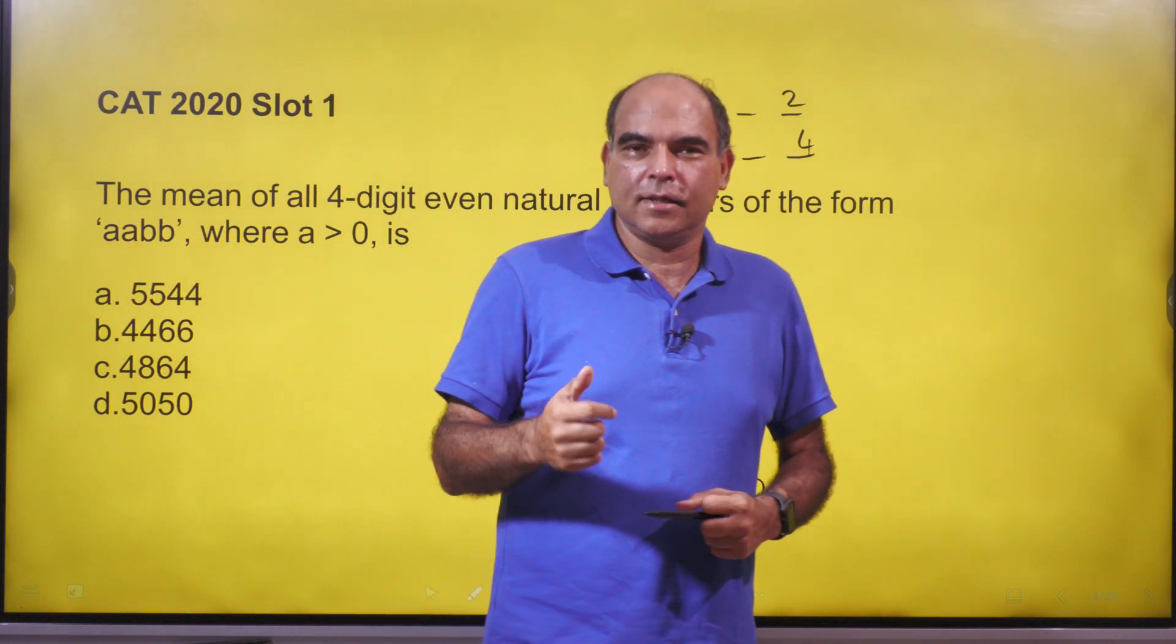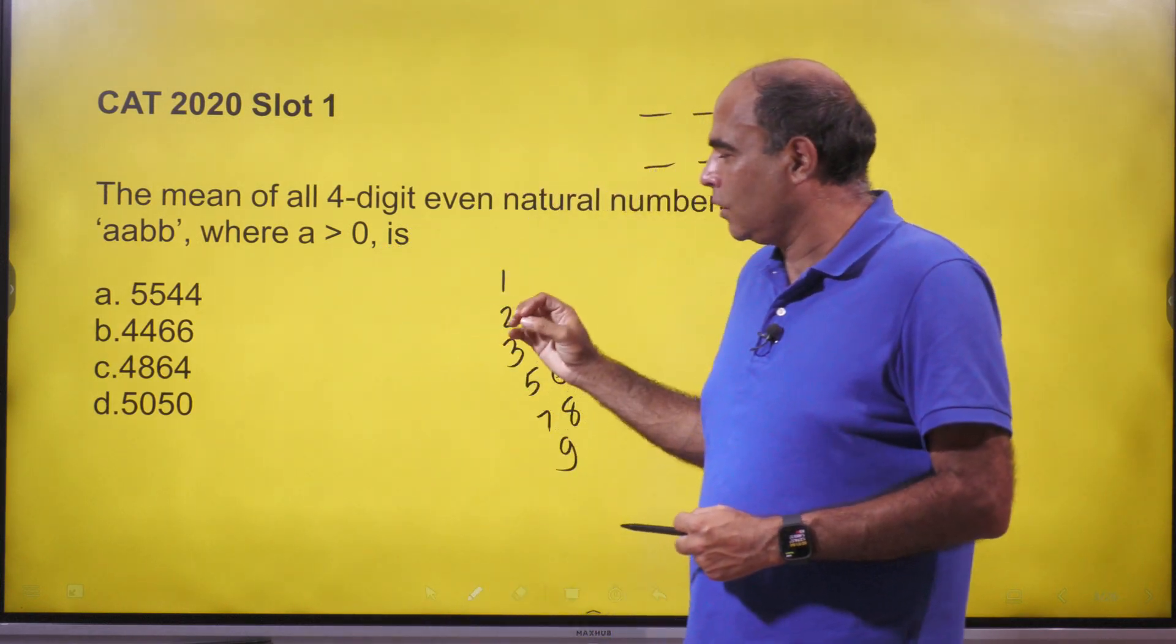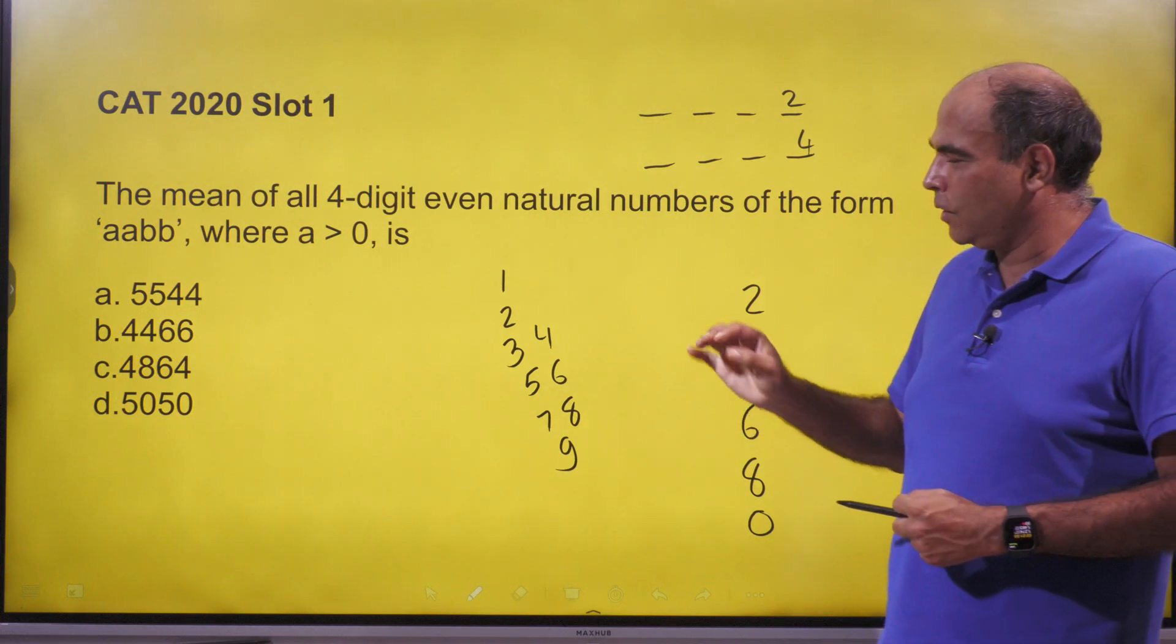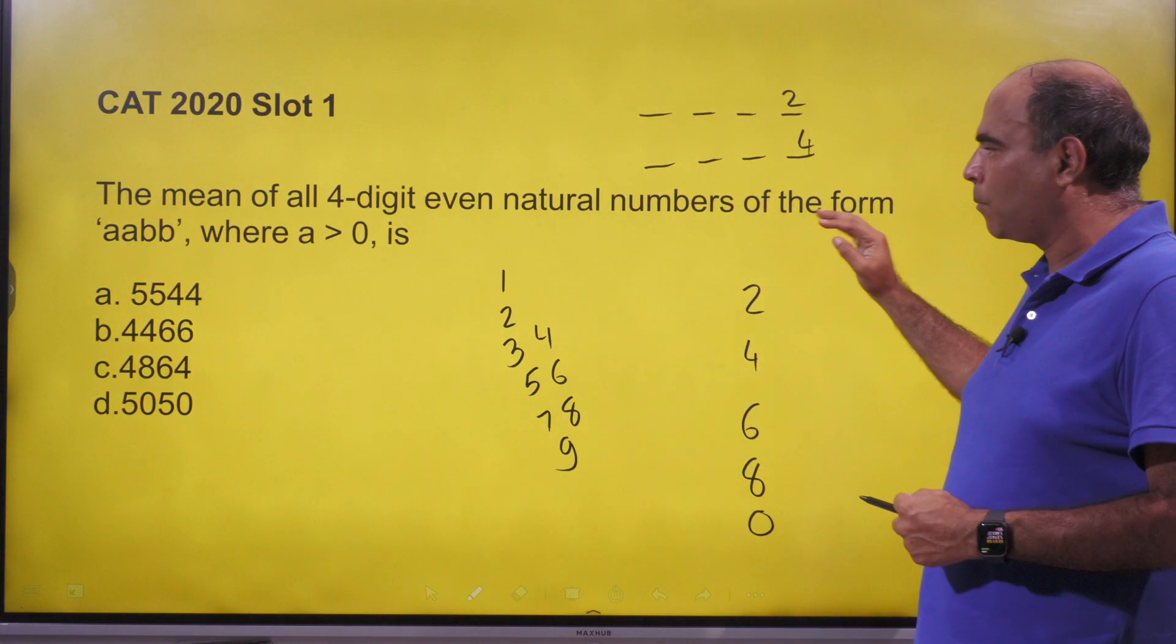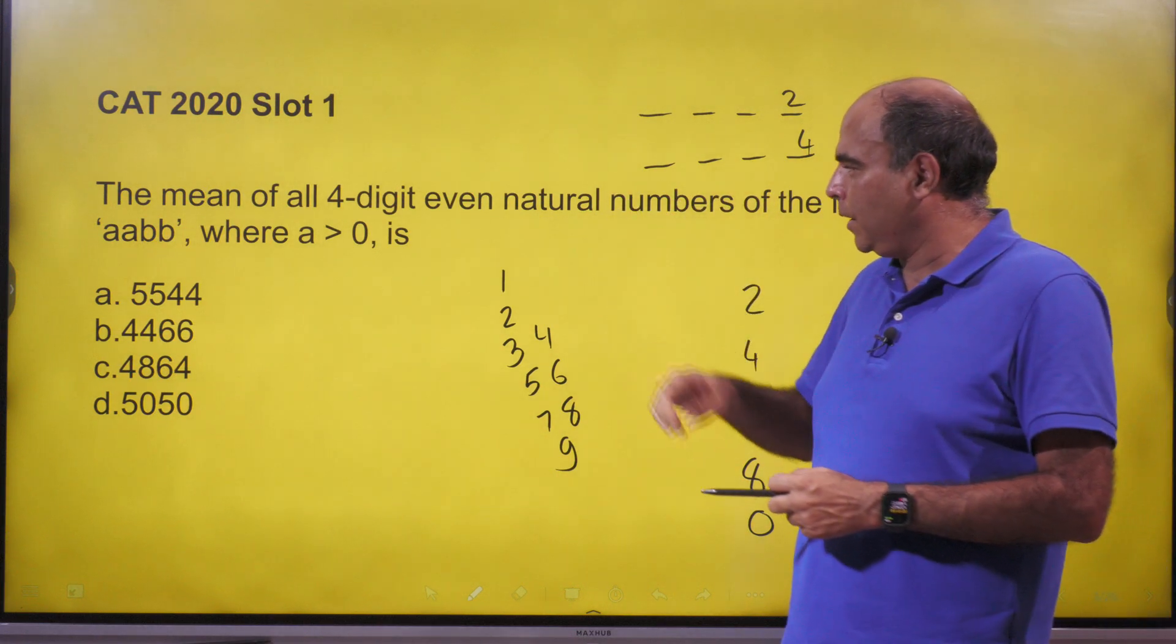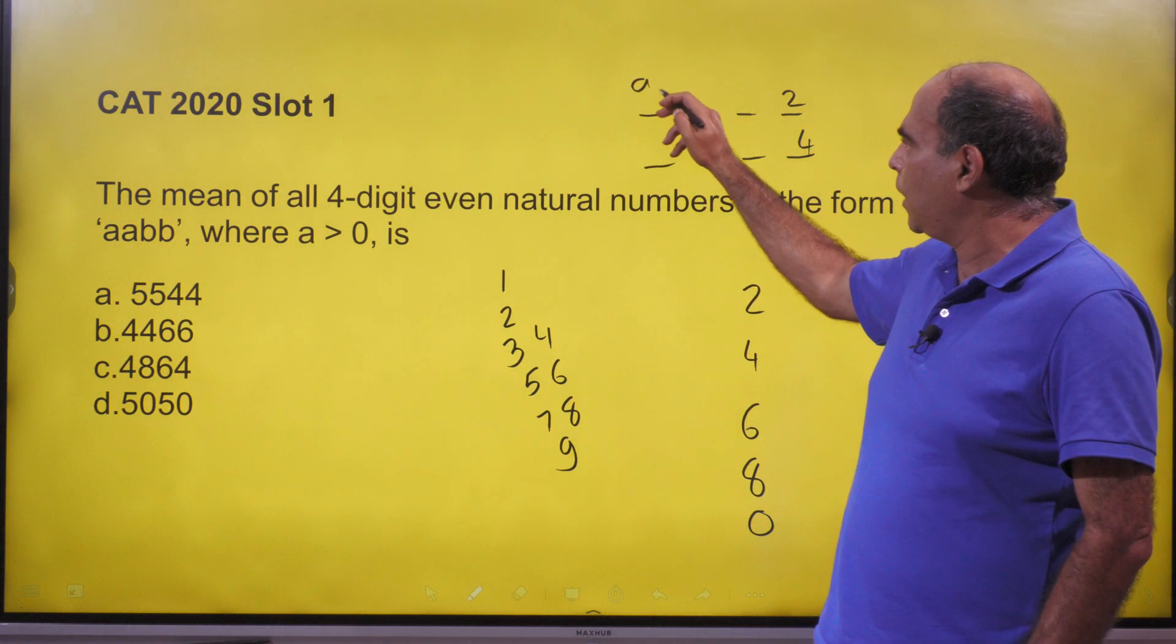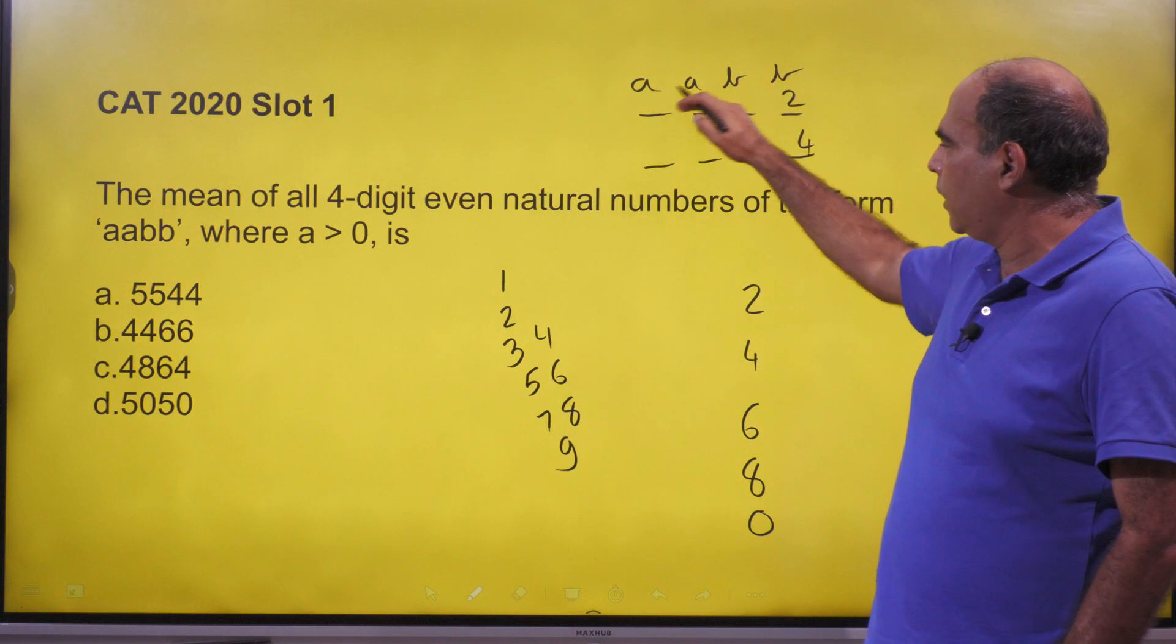Hey guys, welcome back to the 60 second series, the CAT 2020 slot one question. Very simple solution. The question is: the mean of all four-digit even natural numbers of the form aabb. So we are looking at a number of the form aabb, which means two digits repeated here and two digits repeated here.